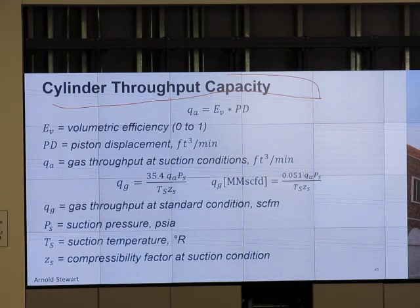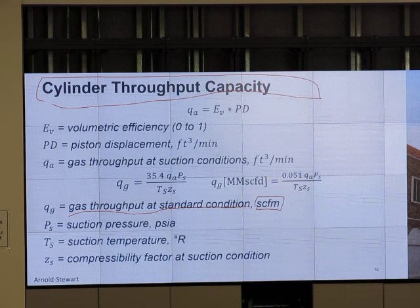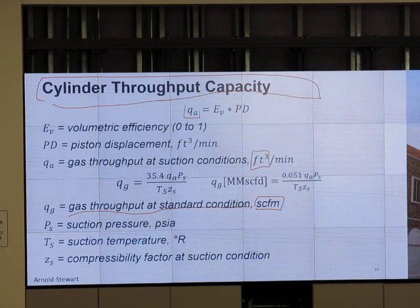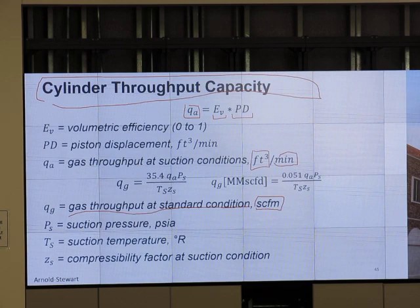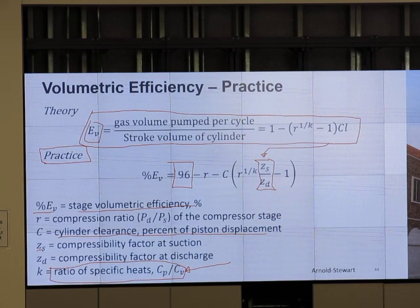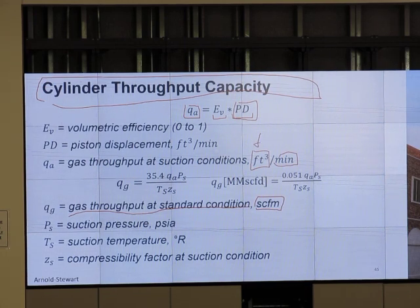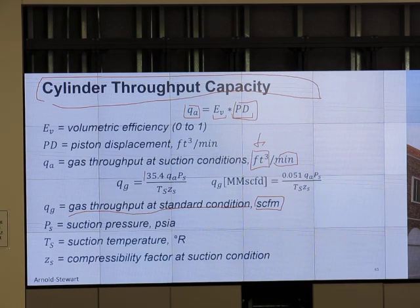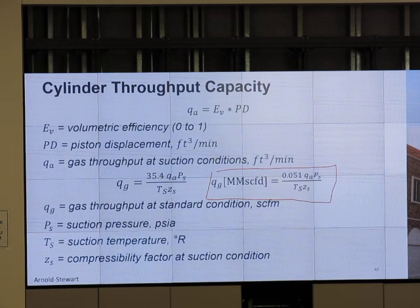Cylinder throughput capacity. How much is the gas throughput at the standard condition? That means actual cubic feet per minute. I have QA, gas at actual cubic feet per minute, equals E sub V volumetric efficiency multiplied by piston displacement. Then I get QA, the actual volume. We multiply by stroke volume, we get actual gas that we pump. But it's not standard volume. I add something to do the conversion from actual volume to standard volume.